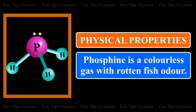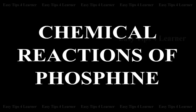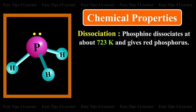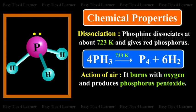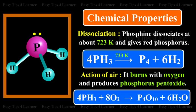Chemical Properties — Dissociation: Phosphine dissociates at about 723 Kelvin and gives red phosphorus.